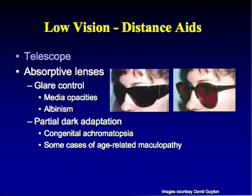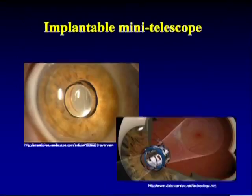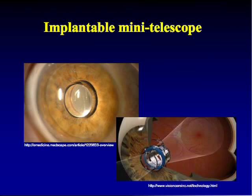Absorptive lenses can control glare and help patients with achromatopsia, dark adaptation problems, media opacities, or albinism. Higher-tech options include head-mounted video cameras and dual video monitors, though these haven't gained wide adoption. Implantable mini-telescopes are in clinical trials; leaving a patient aphakic and providing plus spectacle lenses already gives 25% magnification.